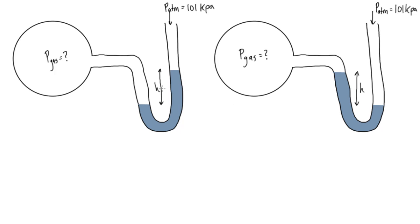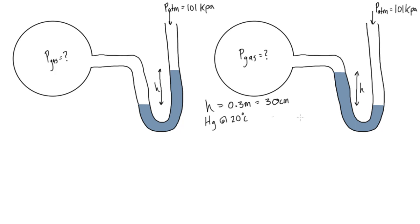In both cases, H is going to be 0.3 meters (30 centimeters), the fluid in both cases is going to be mercury, and we're going to say it's at 20 degrees Celsius. In the first case we want to find P_gas.